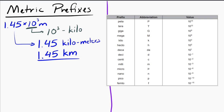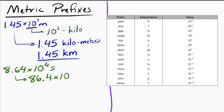Let's try another one: 8.64 times 10 to the 4 seconds. One way to handle this is to rewrite the power of 10 — I can rewrite that as 86.4 times 10 to the 3 seconds. And that 10 to the 3 is the kilo prefix, so it's 86.4 kiloseconds.